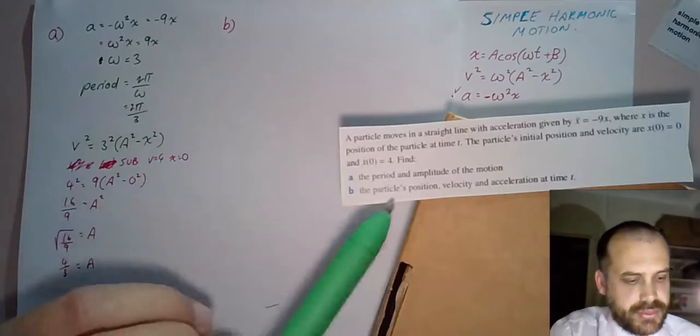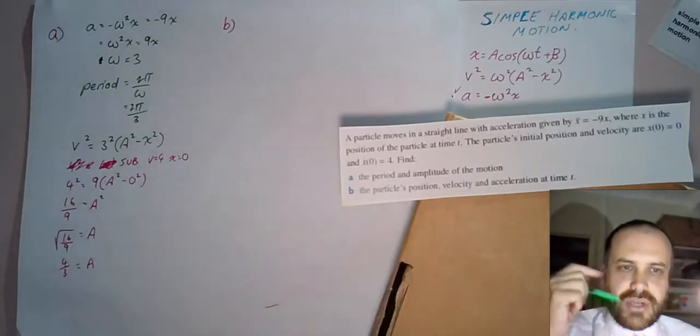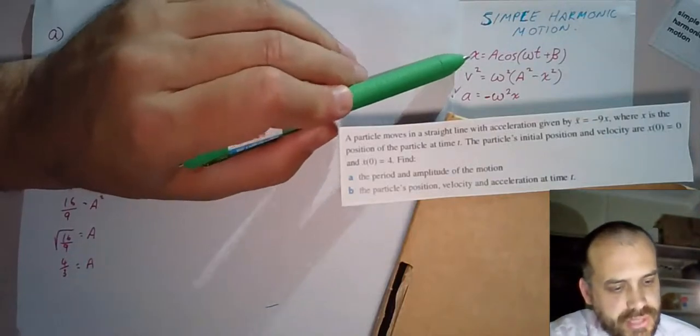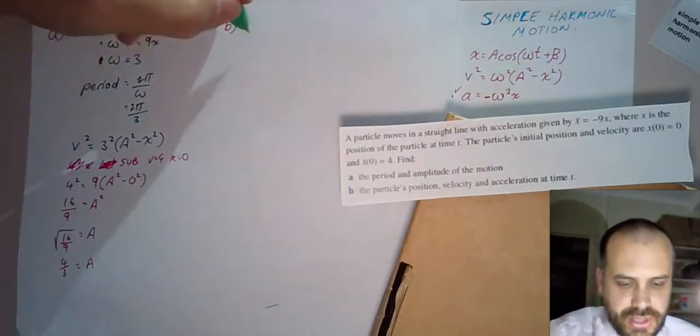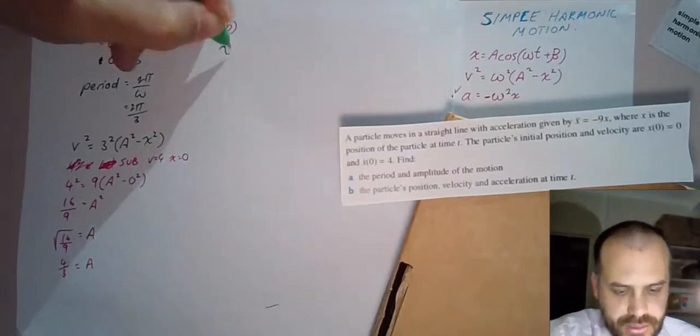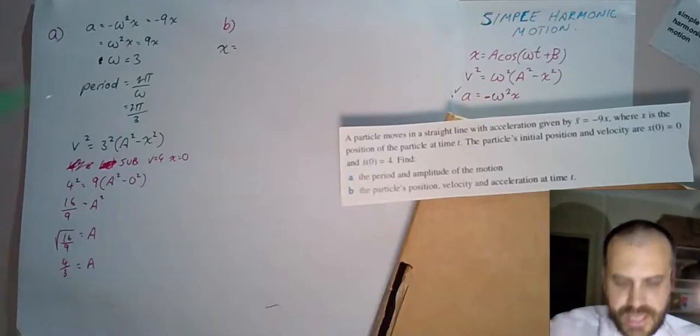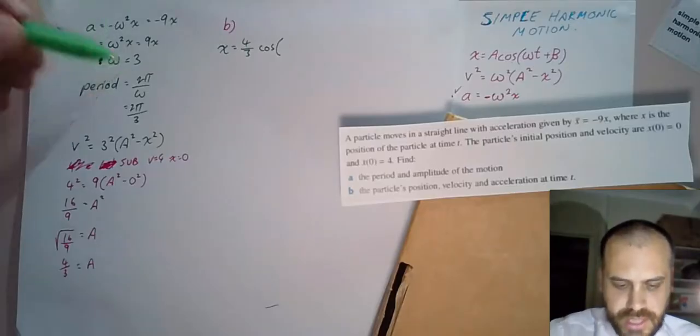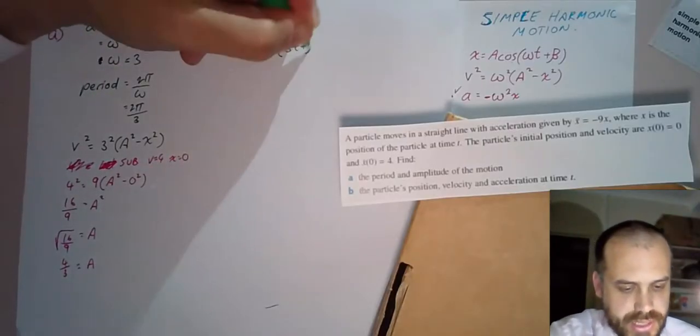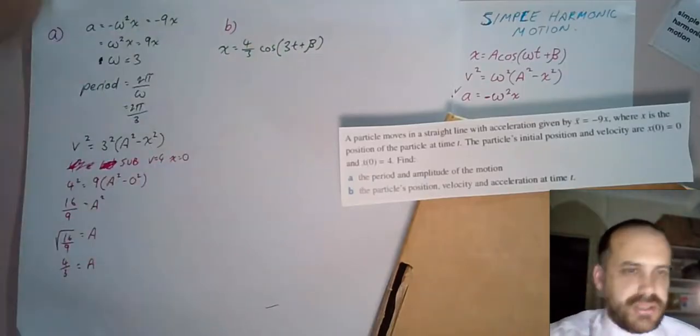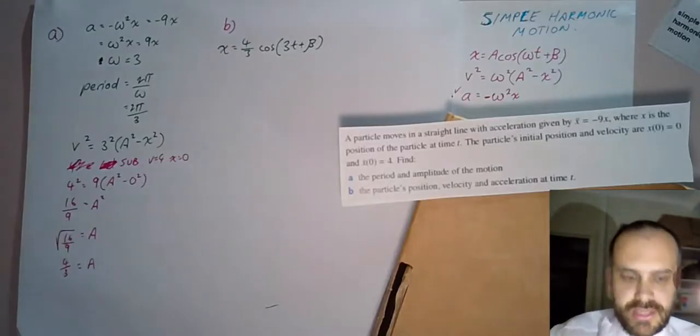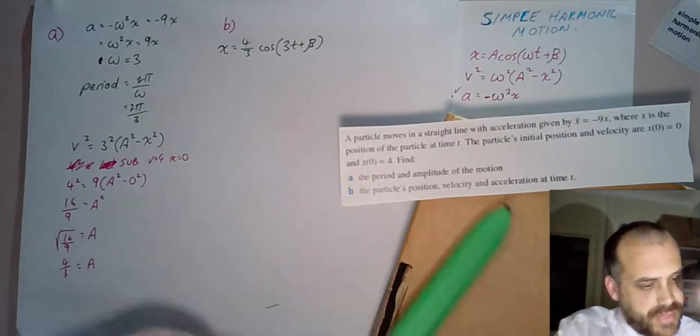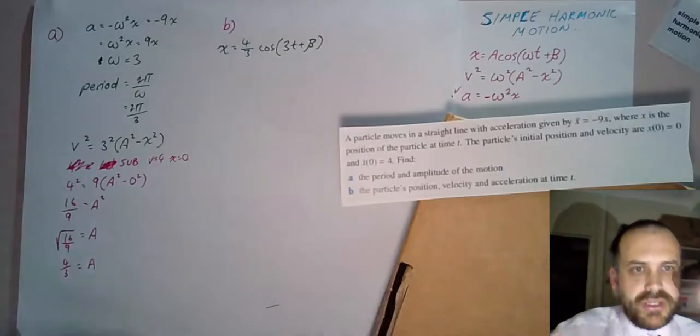Now let's find equations for the particle's position, velocity, and acceleration at time t. First, let's move to displacement, because that gives us displacement at time t. We know that equation already: displacement equals A cos(ωt + β). We know A is 4/3 and omega is 3, so we get x = 4/3 cos(3t + β). Now we need to find that beta.